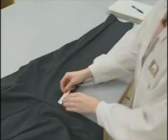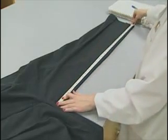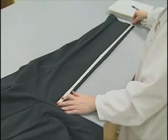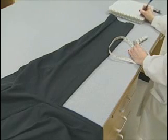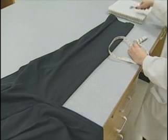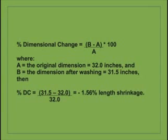After laundering, all the benchmarks are measured again and the shrinkage values are calculated with the same method as used with the shirts. The inseam is measured and the length is recorded. If the final measurement is smaller than the original measurement, this results in a negative dimensional change, which is shrinkage. A final measurement larger than the original results in a positive dimensional change, which is growth. In this example, the original inseam length was 32 inches and the length after laundering measures 31.5 inches, which calculates to a length shrinkage of 1.56%.